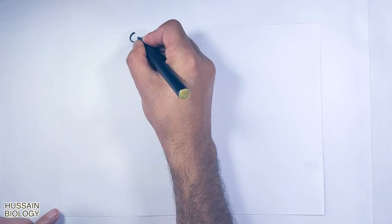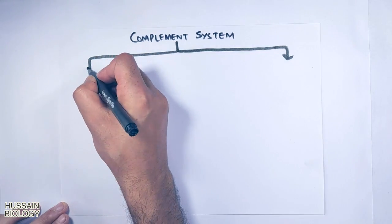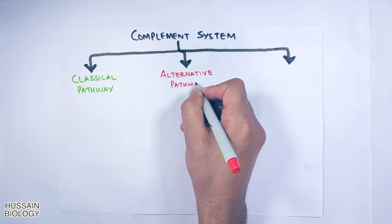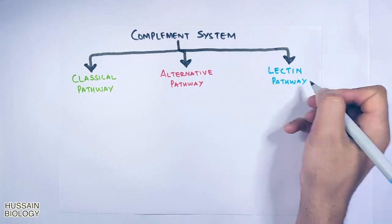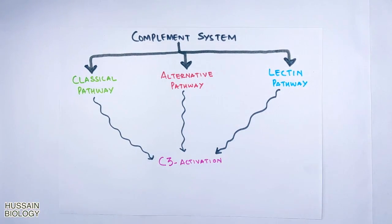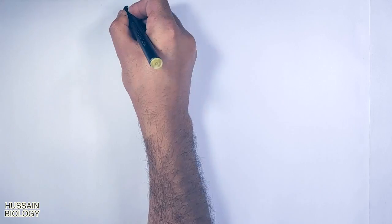If we classify the complement system we see it is driven through three pathways: classical pathway, alternative pathway, and lectin pathway. All three pathways meet at C3 activation and from here we get the common pathway. So let's discuss the classical pathway first.